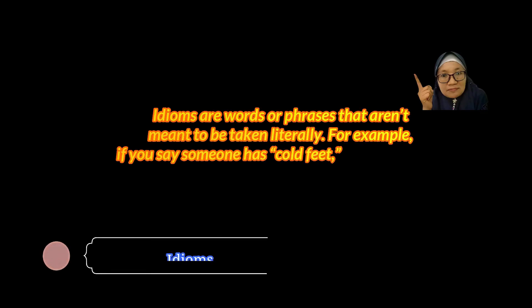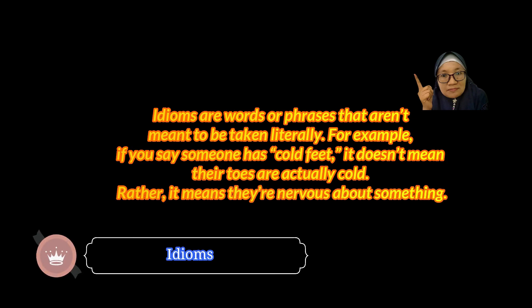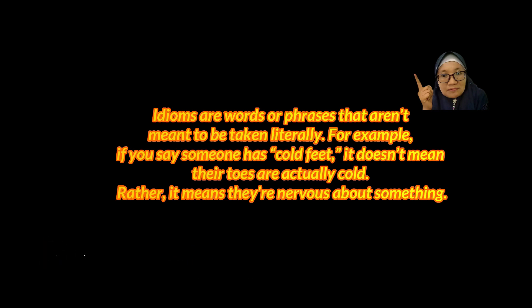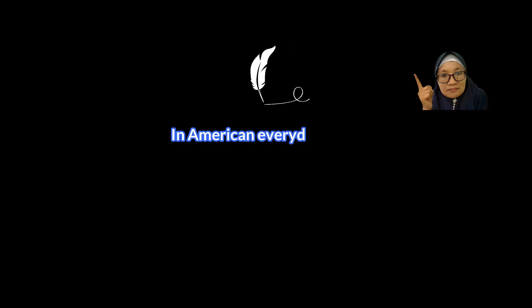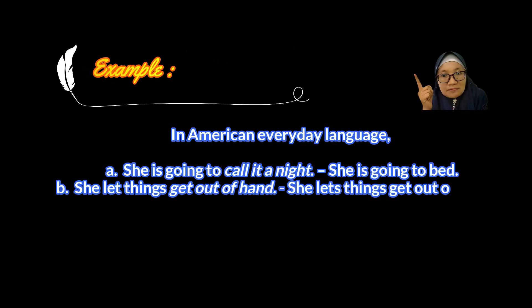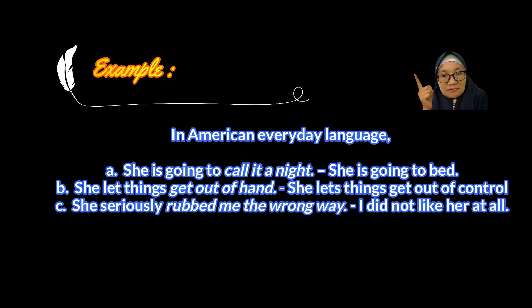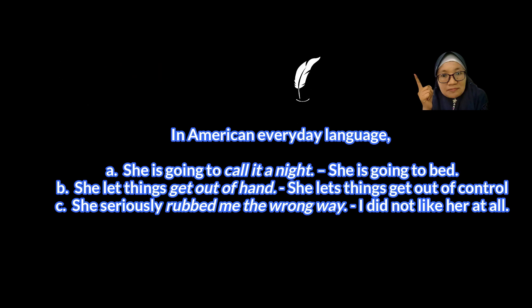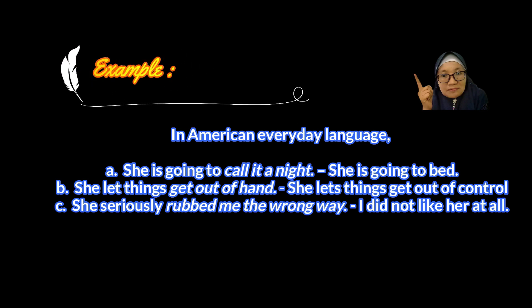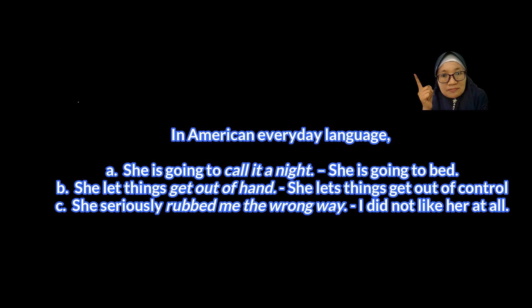The second type is idioms. Idioms are words or phrases that aren't meant to be taken literally. For example, if you say someone has cold feet, it doesn't mean their feet are actually cold. Rather, it means they are nervous about something. Here are some idiom examples: First, 'she is going to call it a night' — 'call it a night' means she is going to stop. Second, 'she lets things get out of her hand' — 'get out of her hand' means she lets things get out of her control. Third, 'he rubbed me the wrong way' — 'rubbed me the wrong way' means I didn't like him at all.